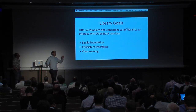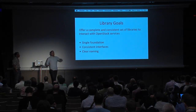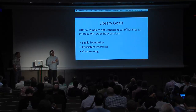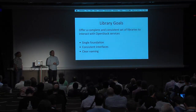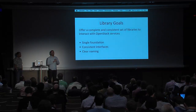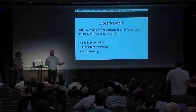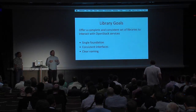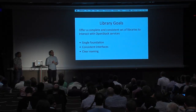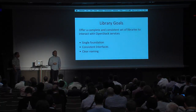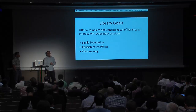Coming to naming — clear naming — trying to get rid of Nova, Swift, Glance, a lot of the project names that we all know internally. Those are not really useful to a lot of end users. Compute, object storage, images are more useful names. It's very clear when you do 'from openstack import compute' that you're working with compute, rather than 'import nova'. People who are customers of vendors, or running stuff at universities, don't really want to have to know the backstory and history of names.